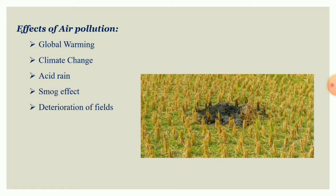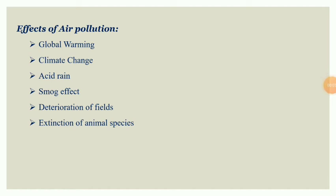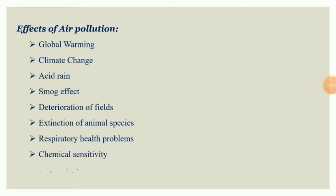This directly affects agricultural fields and the composition of food that we eat. Next is extinction of animal species. Because of air pollution, animals may find it hard to breathe, and this leads to extinction of animal species. Next are respiratory health problems — pollutants can cause respiratory illness and allergies ranging from cough to asthma and cancer. Also, chemical sensitivity and skin damage: many chemical intolerances directly affect people's skin, and the worst is they can cause skin cancer.